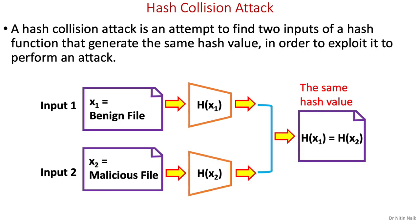Now let's look at a hash collision attack. A hash collision attack is an attempt to find two inputs of a hash function that generate the same hash value. When a hash function allows an attacker to find two such inputs, the attacker can exploit this collision to perform an attack. One possible scenario is compromising the integrity of a benign file if a malicious file has the same hash value — the attacker can replace the malicious file in place of the benign file to achieve their desired goal. Therefore, we need a collision-resistant hash function in security.